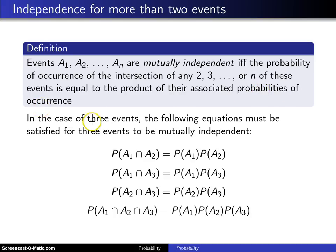So in the case of three events, which was the example in the previous slide, the following equations must be satisfied for the three events to be mutually independent. These first three equations here deal with the pairwise independence of the three events.